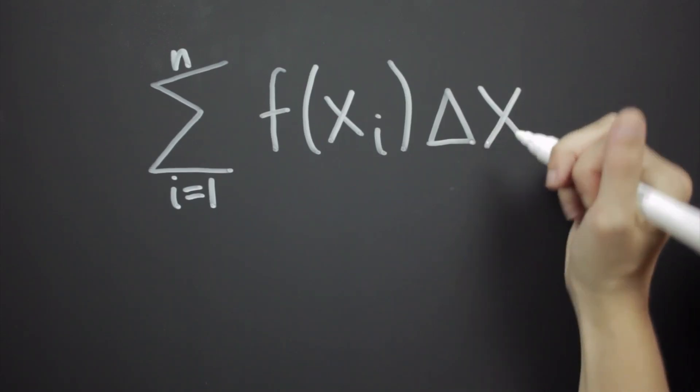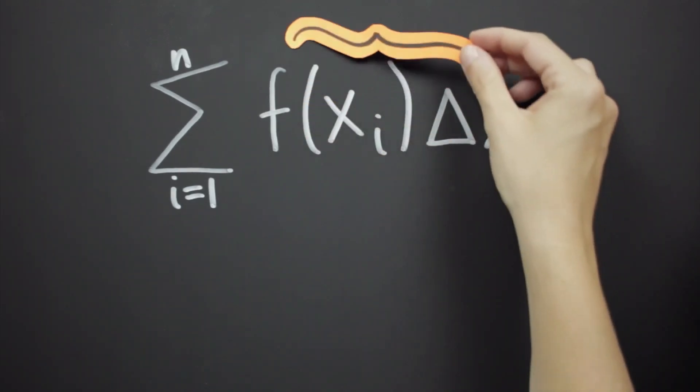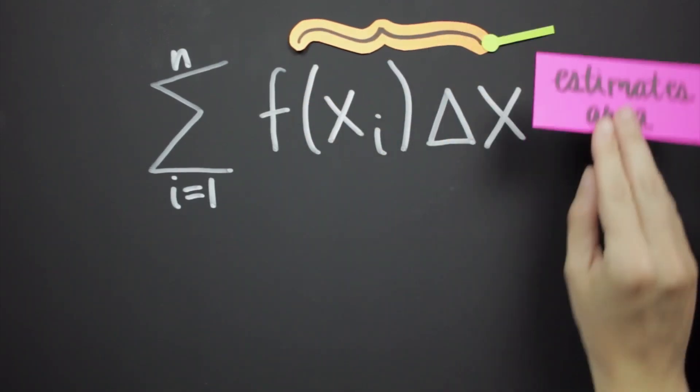Well, this is the definition of a Riemann sum, which is a tool that we use to estimate the area under a curve.